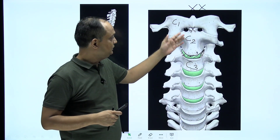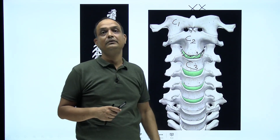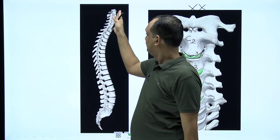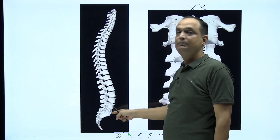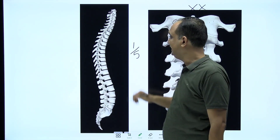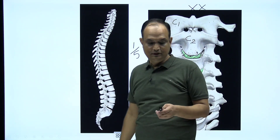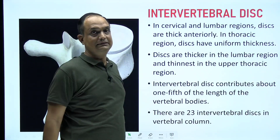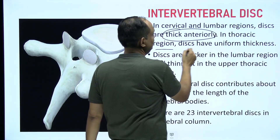The first intervertebral disc lies between the bodies of C2 and C3, as there is no body above C2, and the last disc lies above the sacrum. The intervertebral discs contribute one-fifth of the total length of the vertebral column.